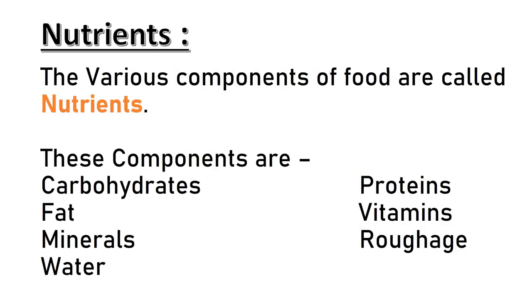Now, what are nutrients? The various components of food are called nutrients. These components are carbohydrates, proteins, fats, vitamins, minerals, roughage, and water.